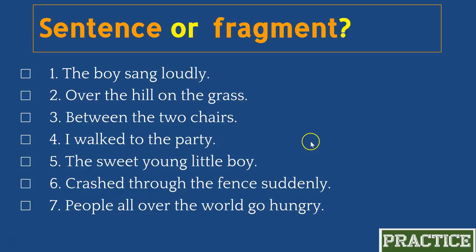Number three: 'between the two chairs.' Fragment — here we just have a prepositional phrase; there's the preposition and the object of the preposition. Number four: 'I walk to the party.' Sentence — 'I' is the subject, 'walked' is the verb, and it makes complete sense.